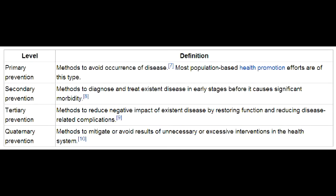What is primary disease prevention? Primary disease prevention is to prevent disease occurrence. An example of primary disease prevention would be HPV vaccination.